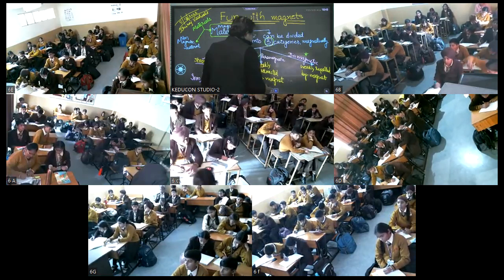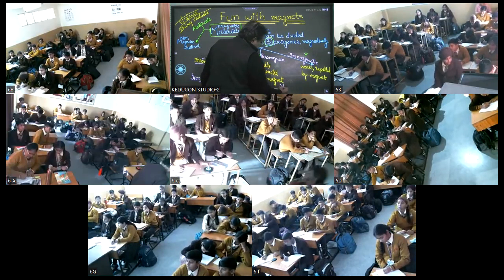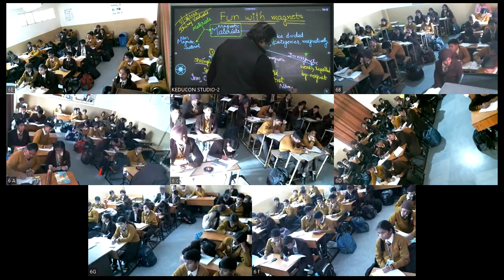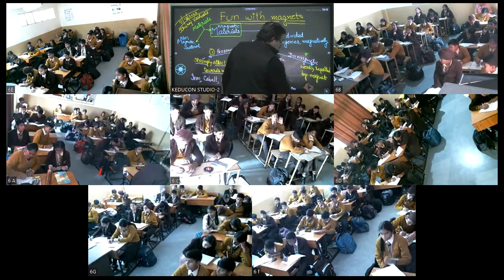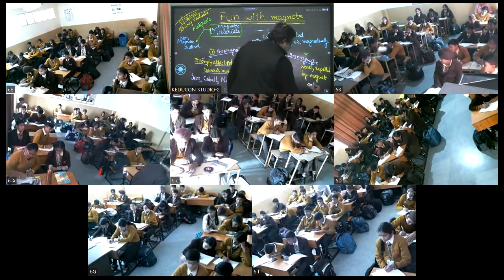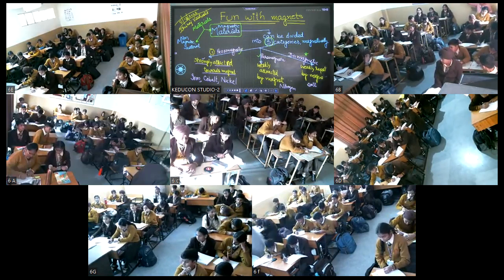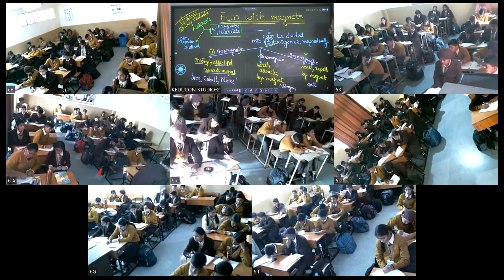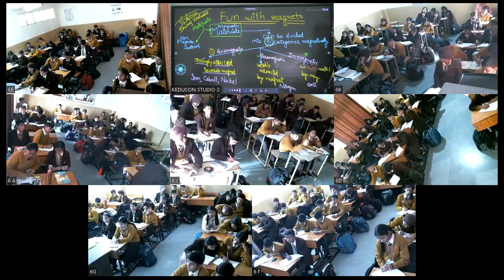और जो चुम्बक की तरफ थोड़ा बहुत खिंचते हैं, जैसे nitrogen (Paramagnetic)। और जो चुम्बक से परे भाग जाते हैं, जैसे table salt (Diamagnetic)। आज हमने देखा कि चुम्बक ने substances को तीन categories में बांट लिया।